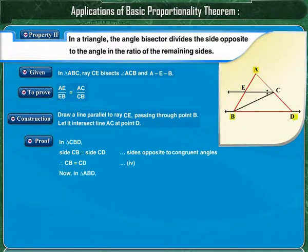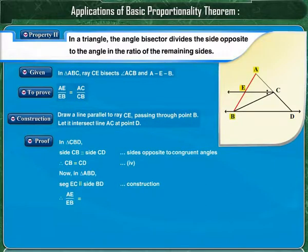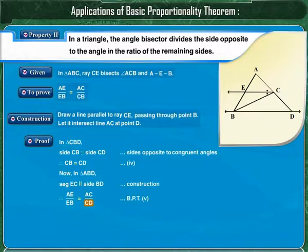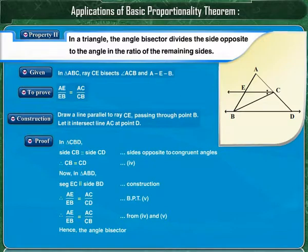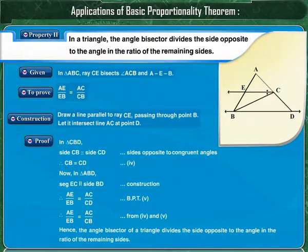In triangle ABD, segment EC is parallel to side BD by construction. Therefore, by the basic proportionality theorem, AE upon EB is equal to AC upon CD. Since we have just proved CD is equal to CB, we can write CB in place of CD. Thus AE upon EB is equal to AC upon CB. Hence, the angle bisector of a triangle divides the side opposite to the angle in the ratio of the remaining sides.